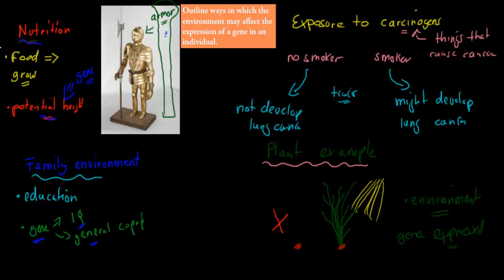So, I'll quickly go over the top one again, it says, outline, which means you should state some basic facts, outline ways in which the environment may affect the expression of a gene in an individual. We went over a couple of different ways, we went over things like nutrition, how that can have a massive impact, for example, when it comes to growth, that our potential height might not be reached if we don't have enough food. An example was a knight.